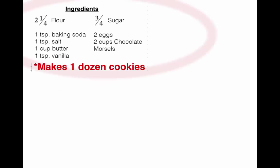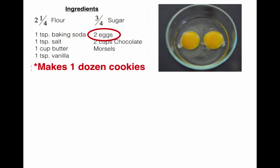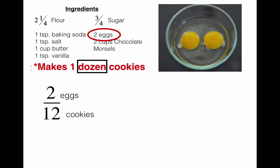We've got our list of ingredients and we know it makes a dozen cookies. Let's start with the two eggs. If our recipe takes two eggs, then we need to buy some eggs at the store. We're going to turn this into a ratio: two eggs makes a dozen cookies — and a dozen is 12. So I'm going to write that as two eggs over 12 cookies.